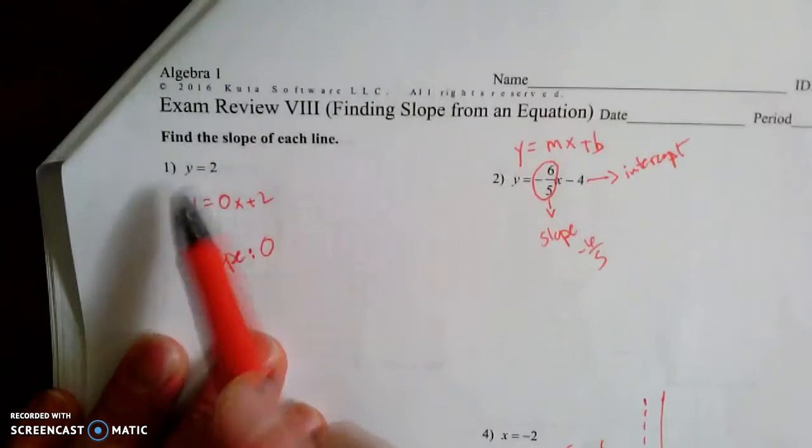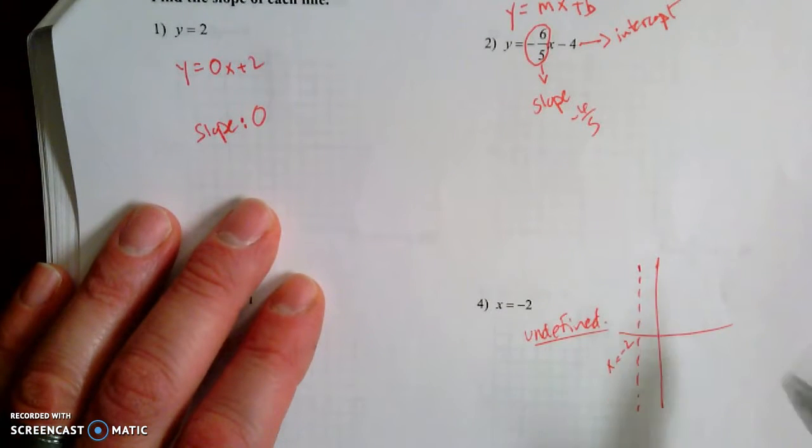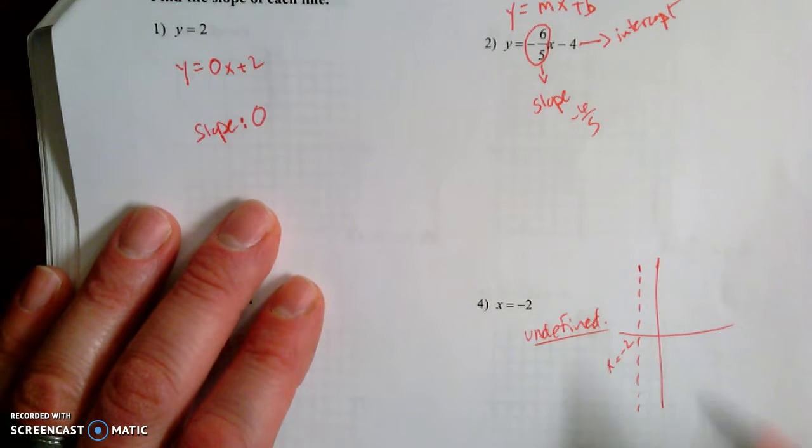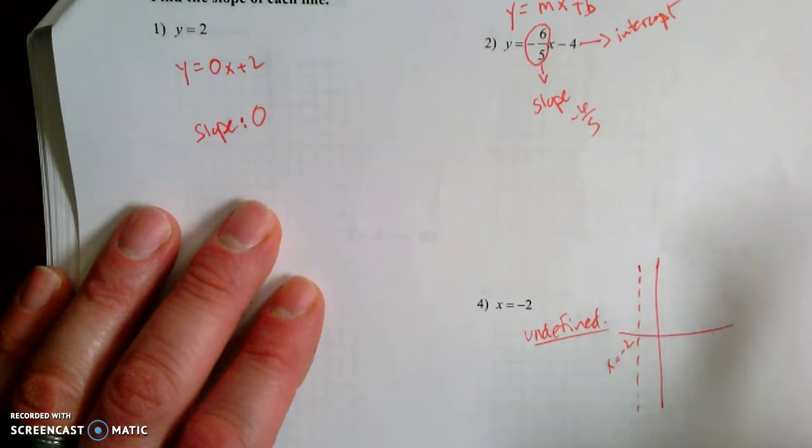So again, if it's just y equals, then it's a 0 slope. The slope is 0, which means it's a horizontal line, by the way. It doesn't rise or fall. It's not steep at all. And here, undefined is when you just have x equals something and there's no y because that's a vertical line.